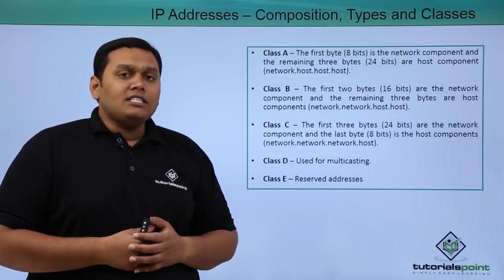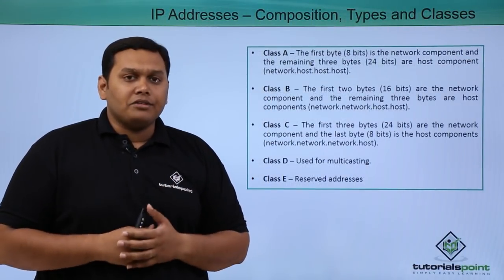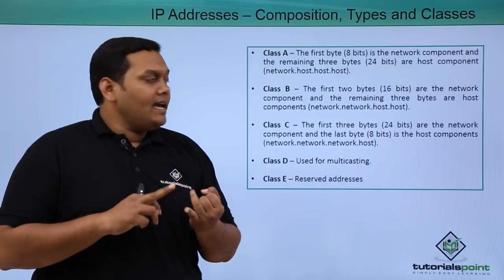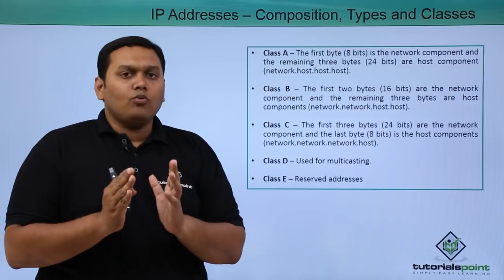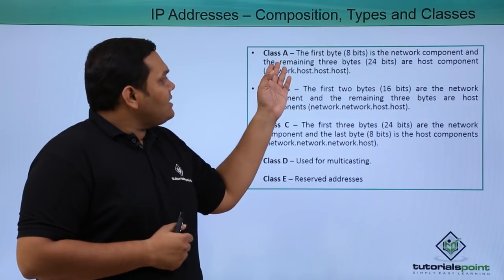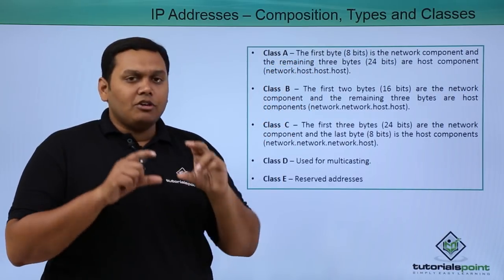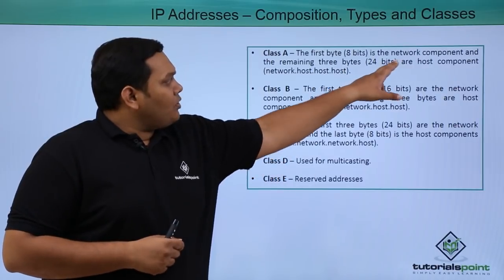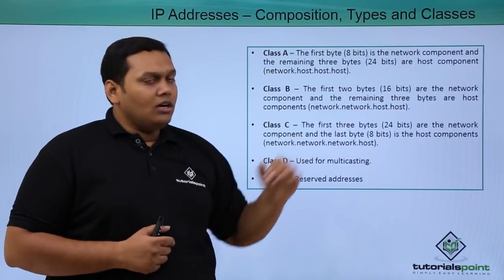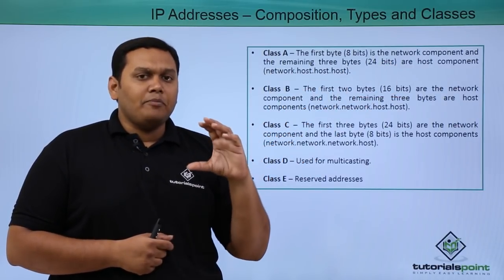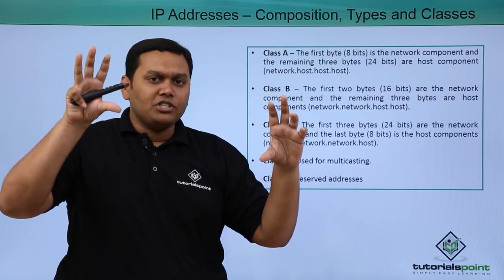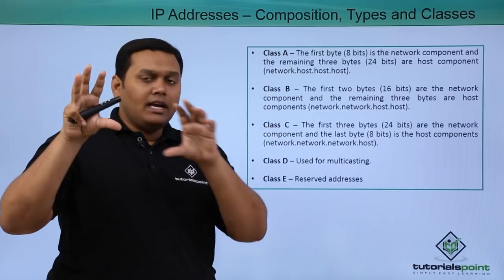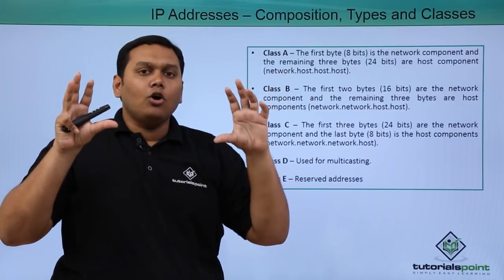Coming to the classifications of IP addresses, these are classified into Class A, Class B, Class C, Class D, and Class E. What is Class A? Class A has the first byte, which is the first octet in the network component, and the remaining are all host components. As I said, the IP address is divided into four components. The first one is the network component and the rest three components come under host components.